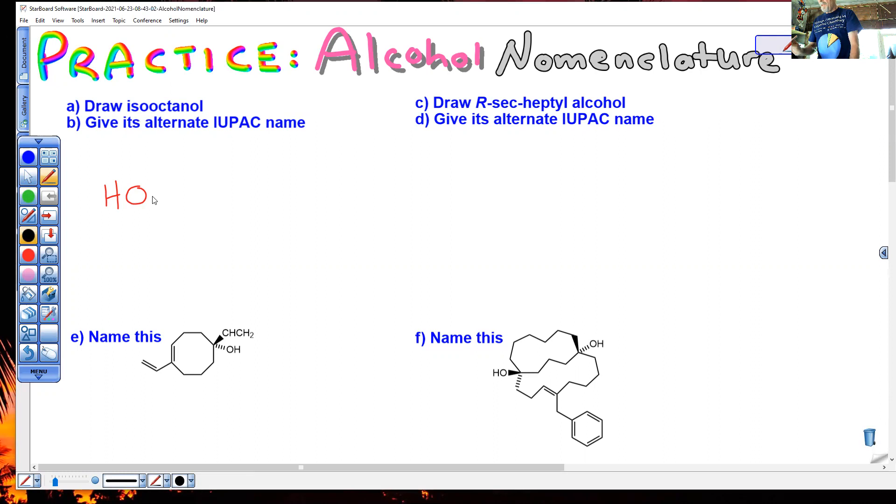How do you draw an isooctyl group? You draw seven carbons in a row - octyl is eight minus one is seven. One, two, three, four, five, six, seven. And there's a V as far away from the OH as possible. That is isooctanol. Make sure you have eight carbons attached to the OH.